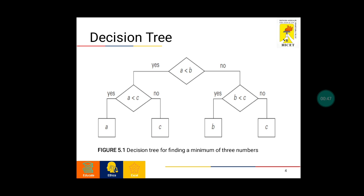This is the decision tree for finding a minimum of three numbers. First we are comparing A less than B. If it is true, then we are comparing A less than C. If it is true then we are printing A. If A less than C is false then we are printing C. If the root node A less than B is false then we are comparing B less than C. If it is true then we are printing B, otherwise we are printing C.